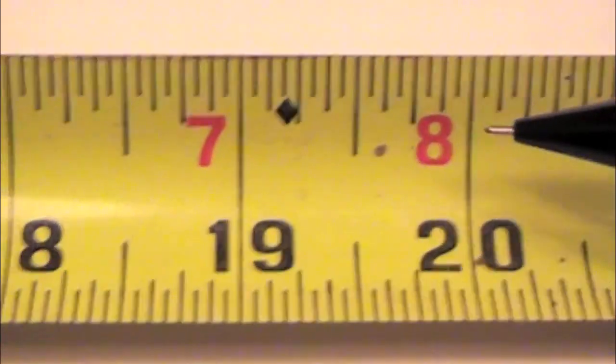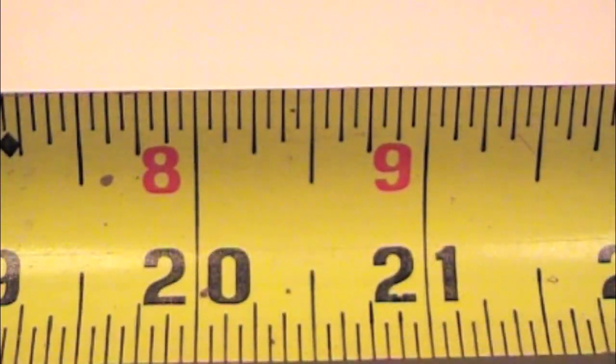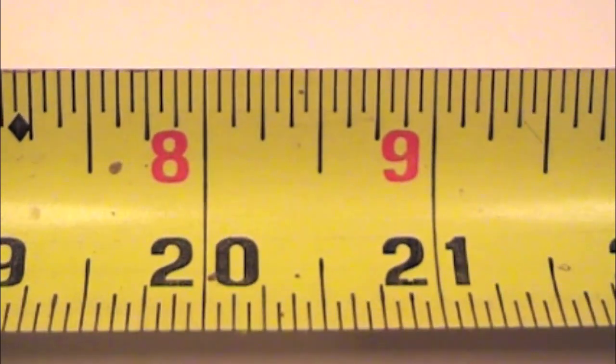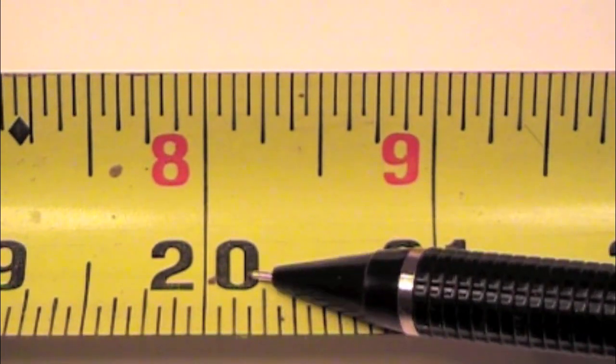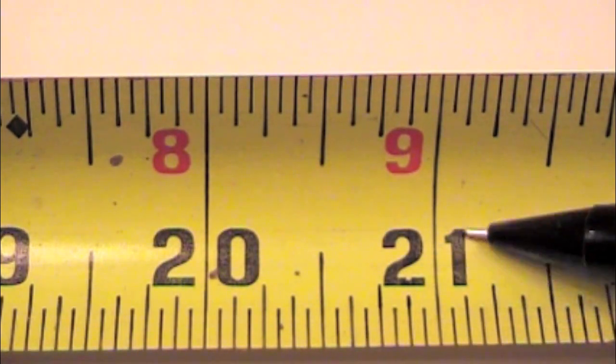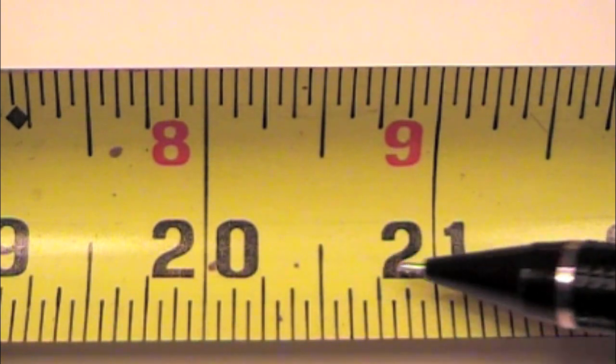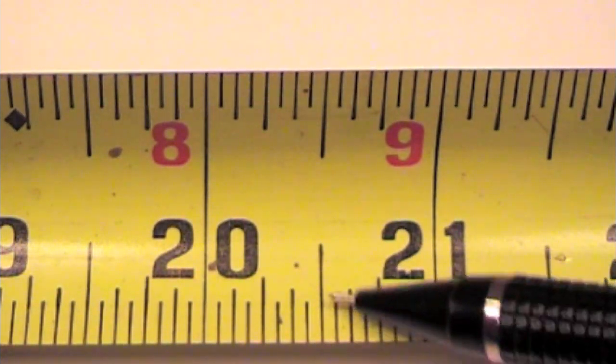Now what I'd like to do is, let's cover what's in between these full inch marks. To make it easy, I'm going to go up to twenty inches, so that we're dealing with a zero, and a one inch. In between the zero, and the one, we have several divisions.